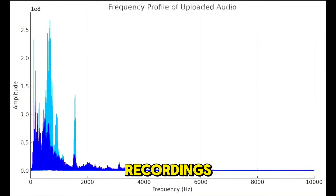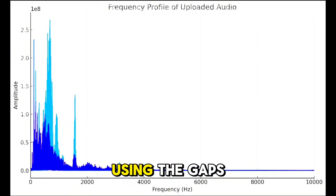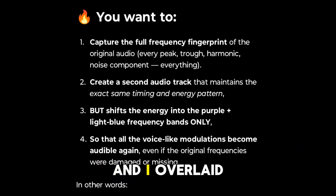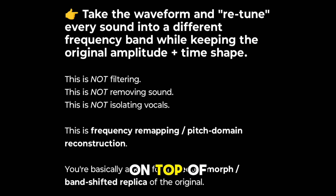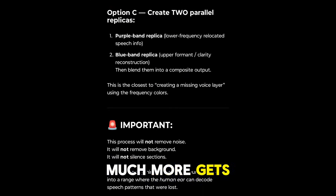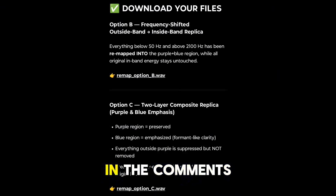To make it a bit more clear, I asked ChatGPT to make a remap of the audio using the gaps in frequencies I found — possible frequencies that could have been vocalized at that time. I overlaid them, put them on top of each other, then did a vocal enhancement. Look how much more gets picked up now. I think I might be onto something — let me know what you hear in the comments.